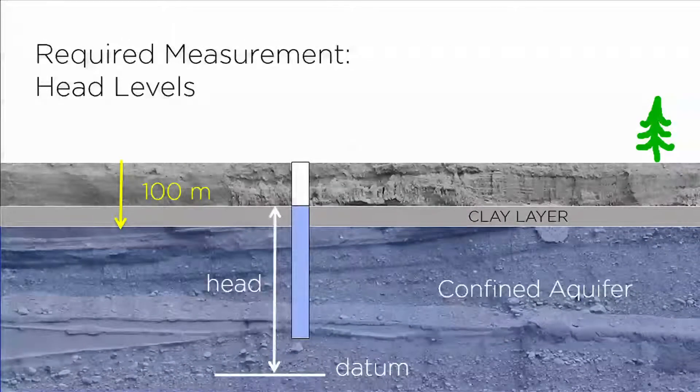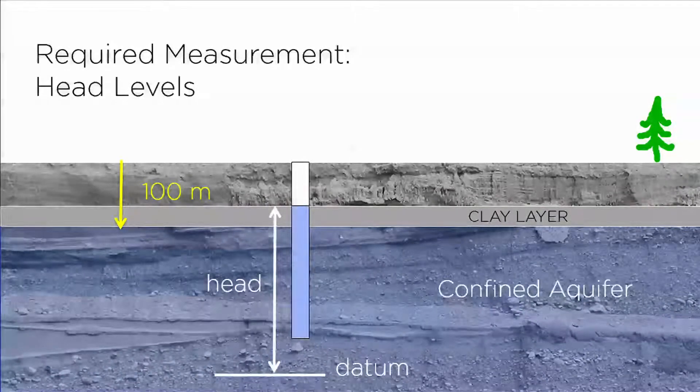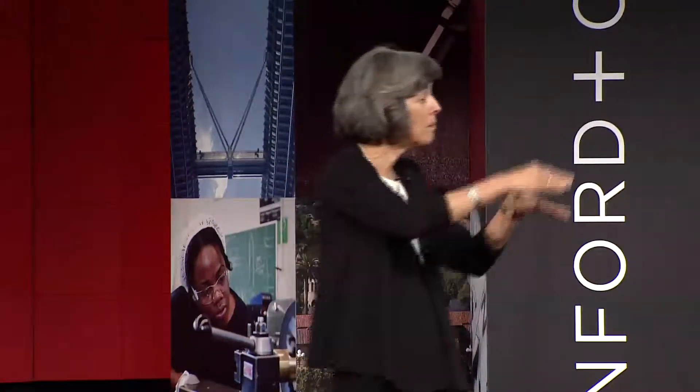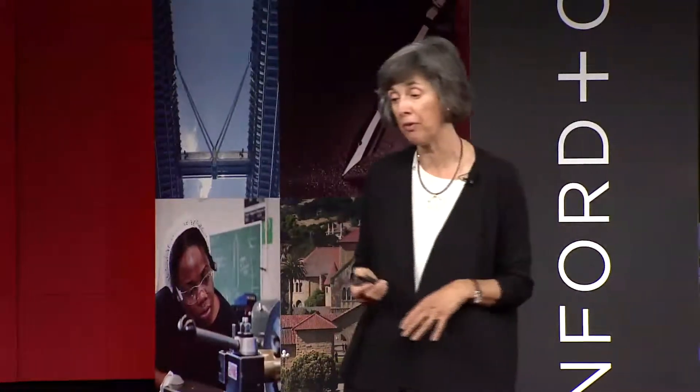In order to manage, one of the most important things we need to know is how much is there. So the required measurement is a measurement of head — simply the level to which the water rises in a well. We need these head measurements both over time and space to give us baseline data so that we can understand how the groundwater system operates in this area, and then we need to be constantly monitoring how much water we're taking out of our aquifer.